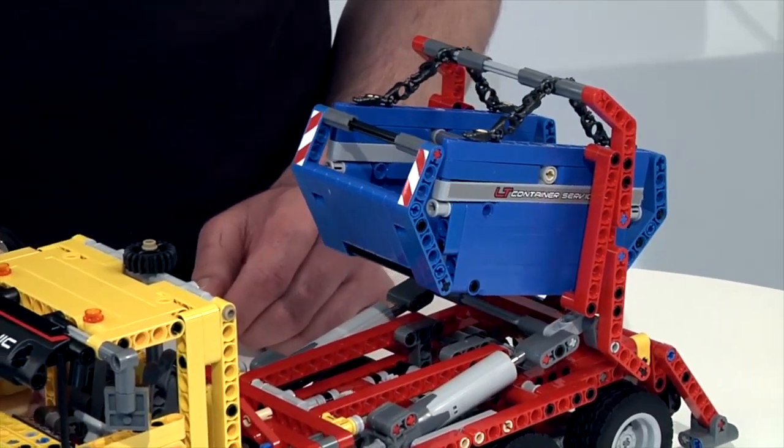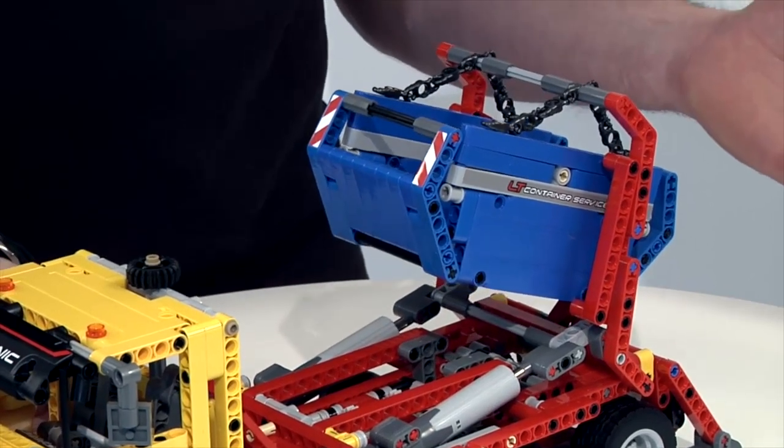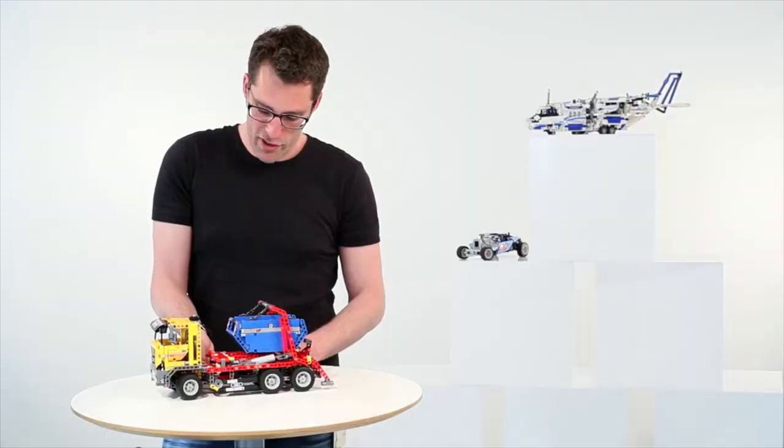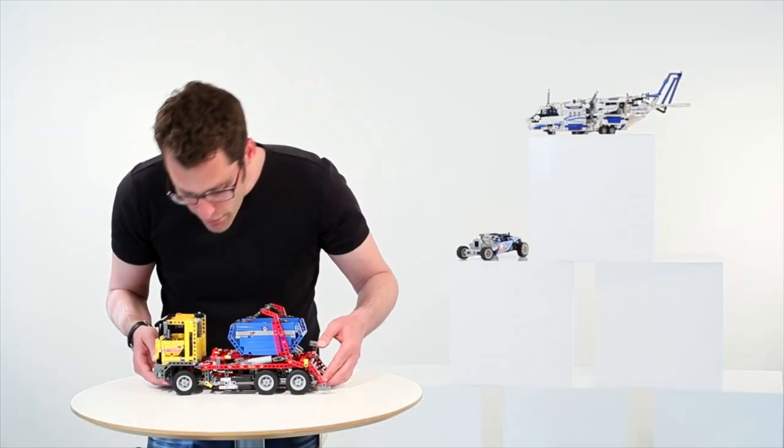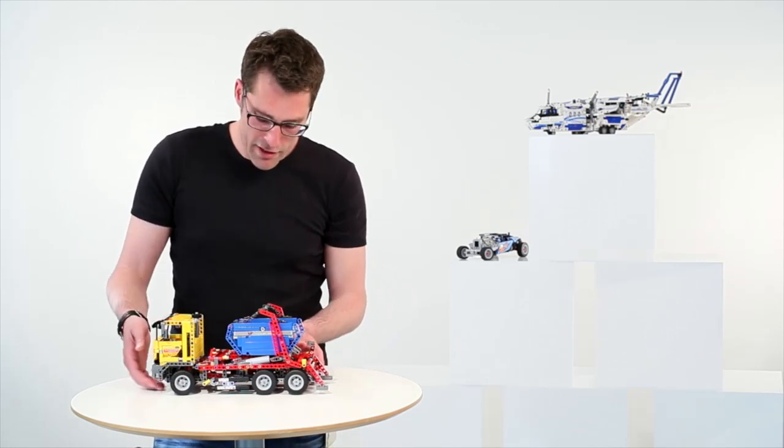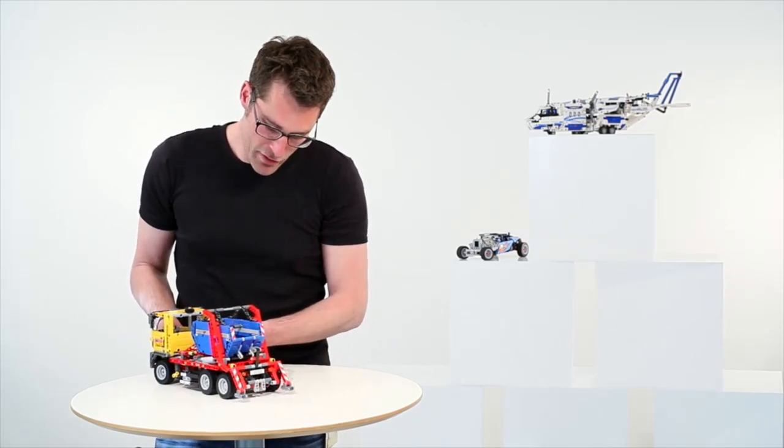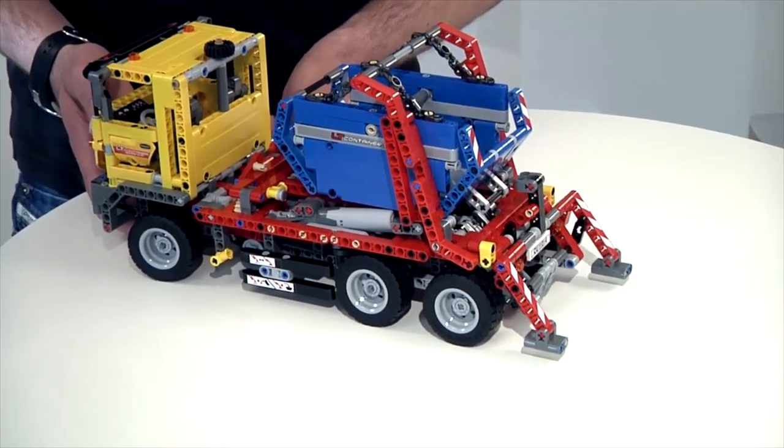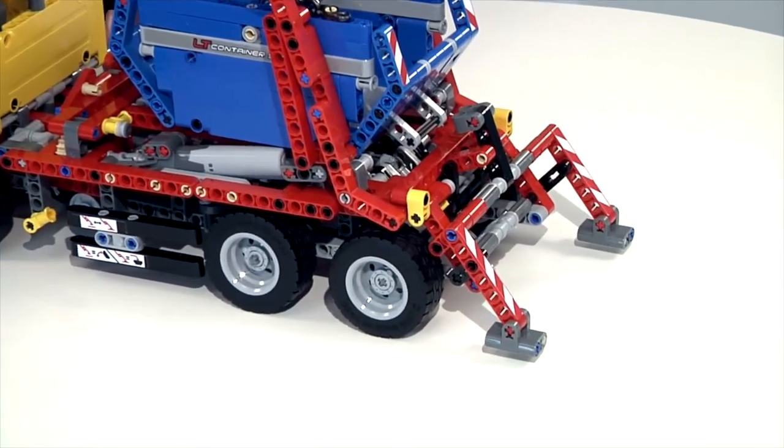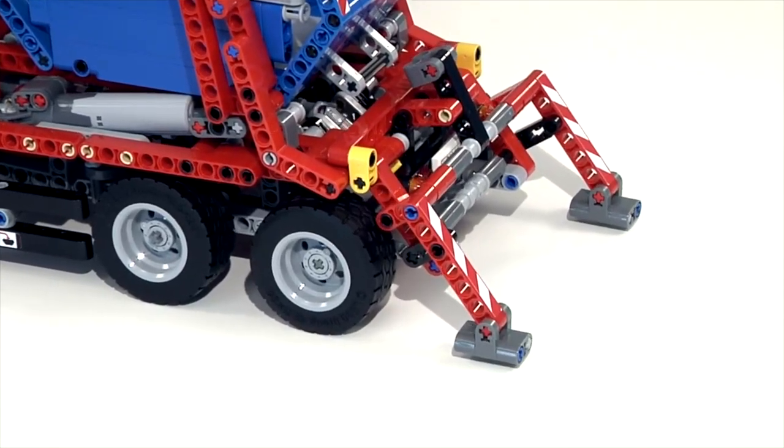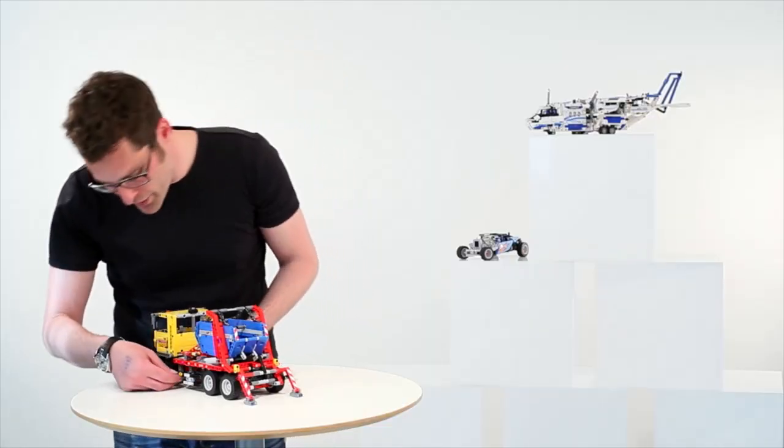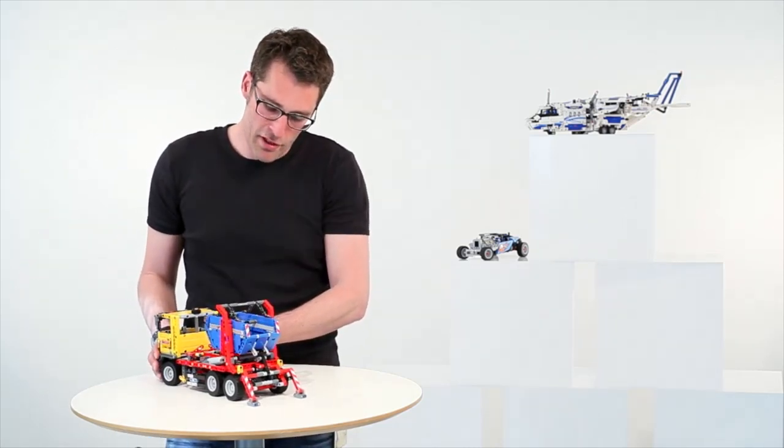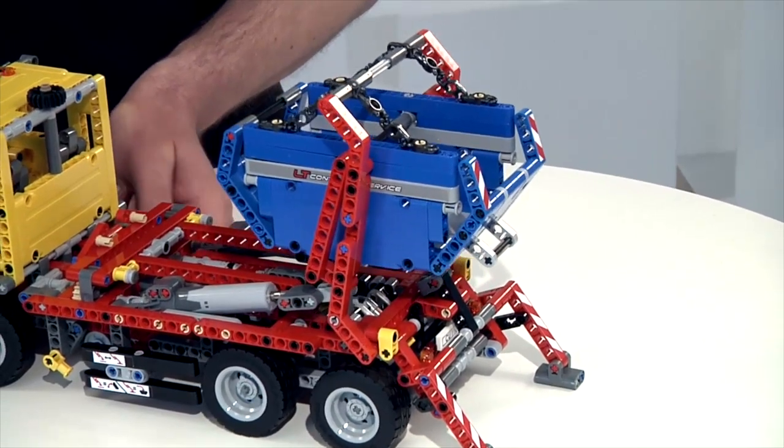And it has the possibility of either using the tipping of the container. Like this. And then you can actually tip it all the way over and put down your cargo. The other function which you select on this gear shifter is actually the rear supporting legs, which I can put down. And the nice thing about this is once you have put down the supporting legs and you switch back to the other function, then it suddenly becomes possible to not tip the container but actually to set it down.